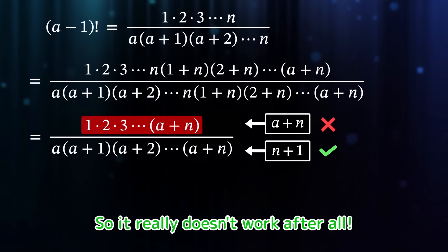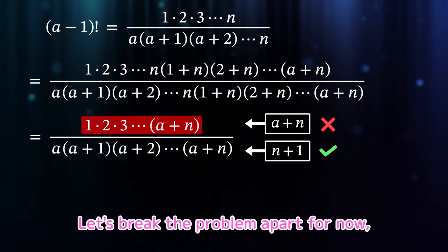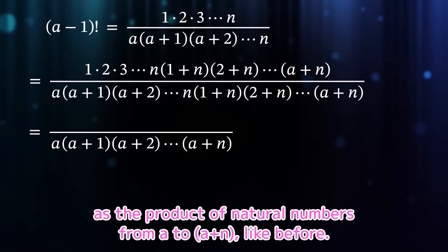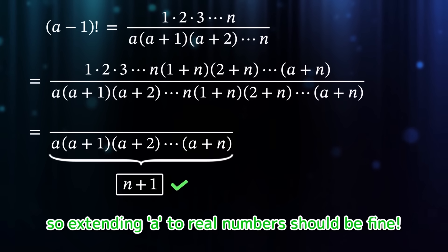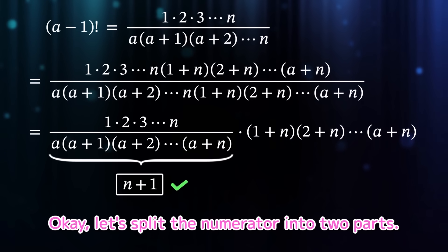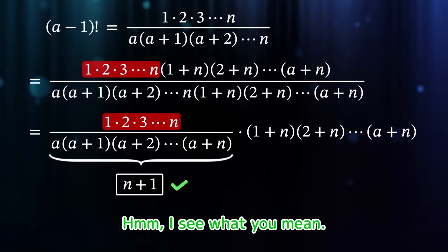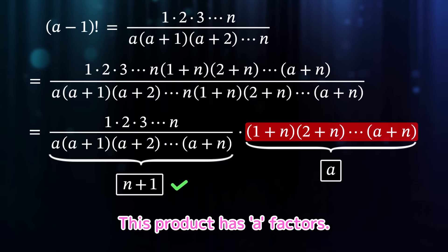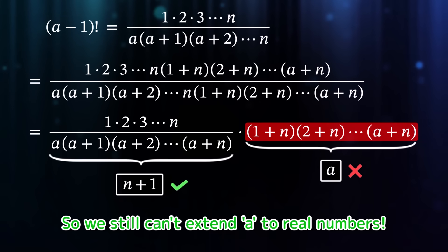When we fix the denominator, the numerator gives us trouble. Let's break the problem apart and rewind a bit. The denominator stays as the product from a to a plus n — no matter what value a takes, this is still a product of n plus 1 numbers, so extending a to real numbers is fine. Let's split the numerator into two parts: the product from 1 to n, which doesn't depend on a, so there's no issue. What remains is the product from 1 plus n to a plus n, which has a factors — meaning a has to be a natural number. So we still can't extend a to real numbers.